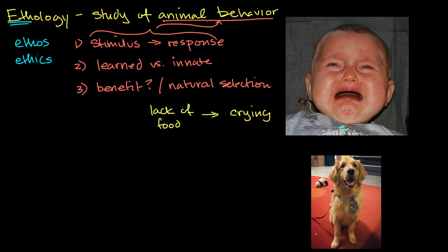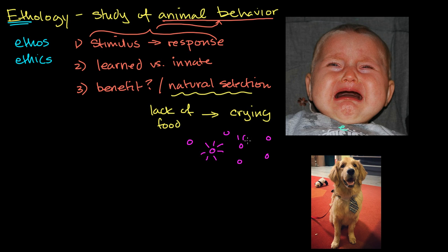There's one stimulus — the child is hungry — leading to the response of the child crying. And then that response is a stimulus to me, producing the response of 'let me feed my child so they stop crying.' You can imagine it has a significant benefit in natural selection. Whatever organism you're talking about, if the offspring that are better at making it known that they are hungry — especially if these offspring are dependent on their parents to get them food — the ones that cry are more likely to get the food and more likely to survive and pass their DNA on to future generations.